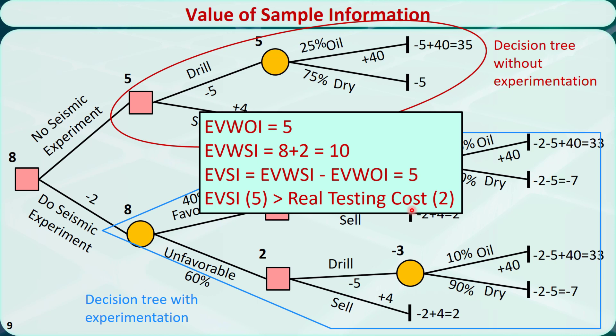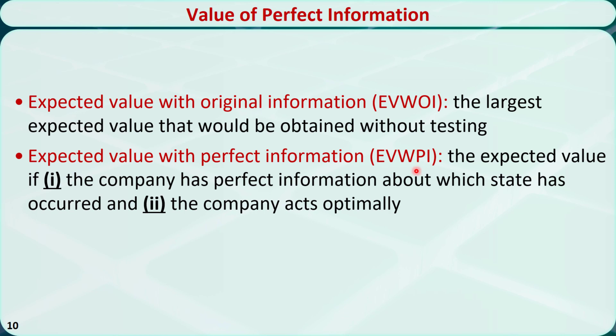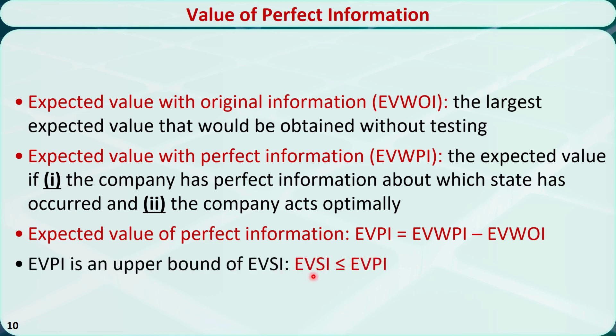The expected value of sample information measures the value of some limited or incomplete information. We can also calculate another index called EVPI, which measures the expected value of perfect or complete information. To do this, we need EVWOI and the expected value with perfect information (EVWPI). EVPI = EVWPI − EVWOI. EVPI is an upper bound of EVSI — meaning the value of conducting experimentation will always be less than or equal to the value of perfect information.